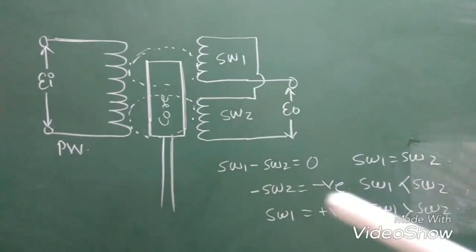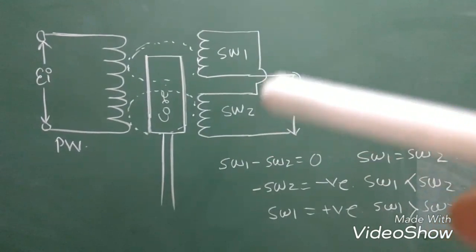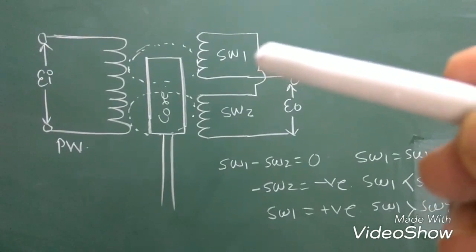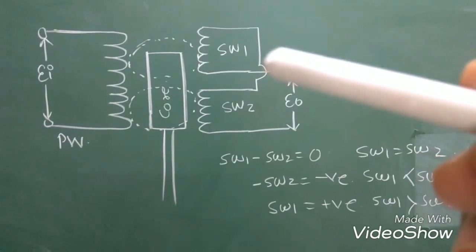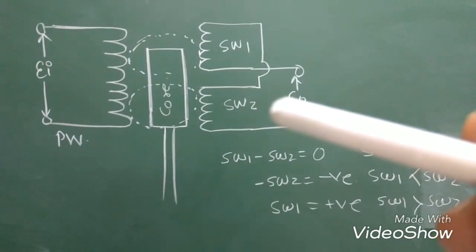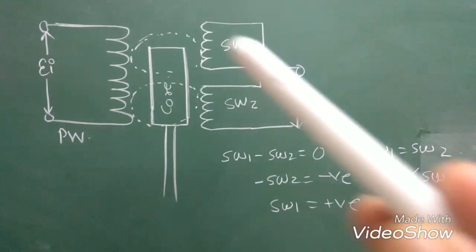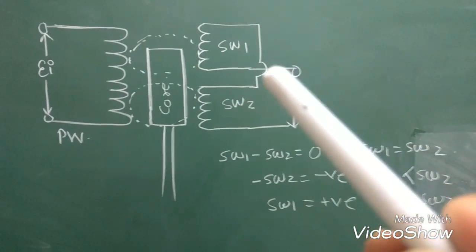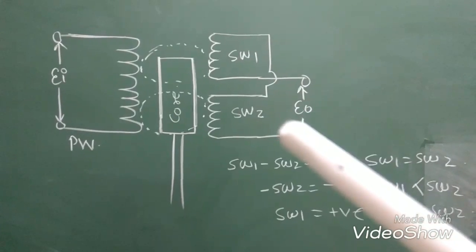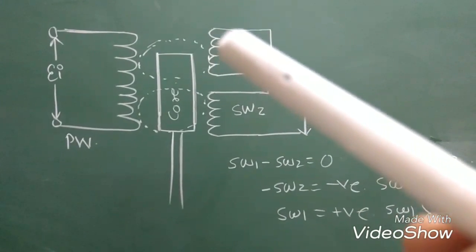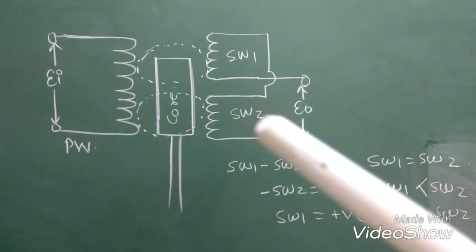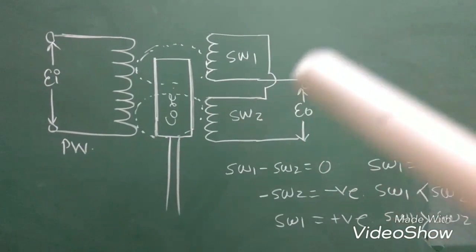Now, in this LVDT, we are having two different secondary windings — secondary winding 1 and secondary winding 2. A few conditions need to be satisfied. First, these two windings, secondary winding 1 and secondary winding 2, must be connected in series. You can see secondary winding 1 is connected with secondary winding 2 in series, and here we are getting the output voltage. Second condition: they must have equal number of turns. The total number of turns on secondary winding 1 must be equal to total number of turns on secondary winding 2.